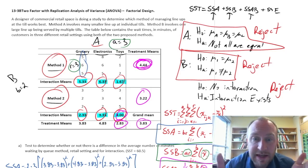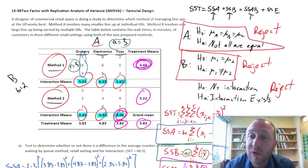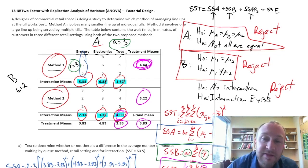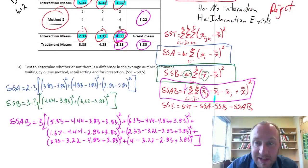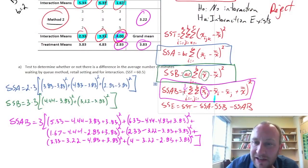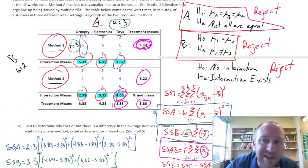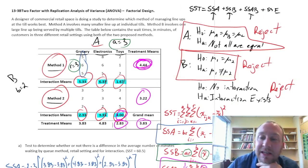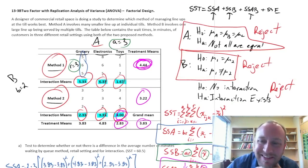That's it — that's how we do a factorial ANOVA. The calculations are a bit tedious, and even skipping the long interaction computation, this still took about half an hour. Hopefully this all makes sense and has been helpful. Thanks very much for watching.